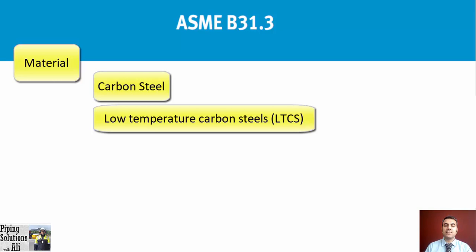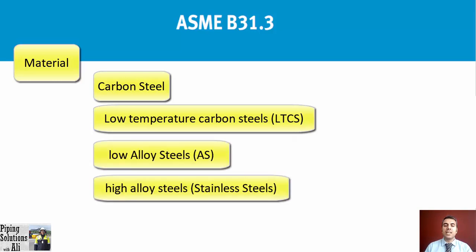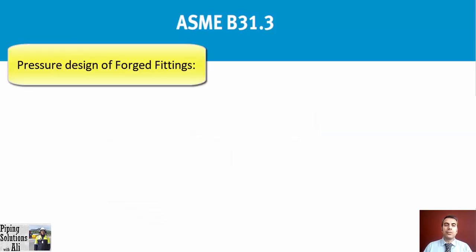In addition to carbon steel, piping components can be manufactured by low temperature carbon steels (LTCS), low alloy steel, high alloy steel, stainless steels, and non-ferrous materials. In these cases, the form of product will specify the ASTM standard per material. Let's go back to pressure design.